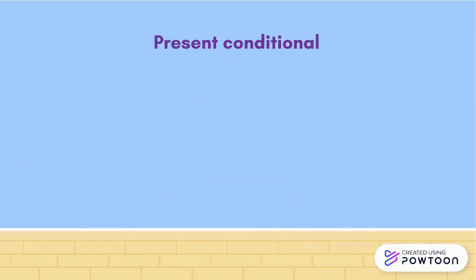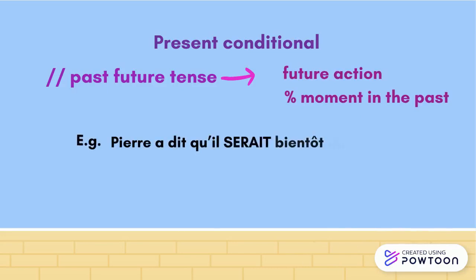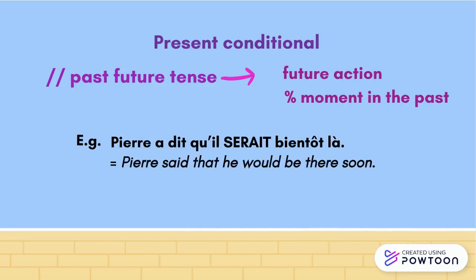The present conditional can be mistaken for the past-future tense, which has the same form, but expresses a future action in relation to a moment in the past. For example: 'Pierre a dit qu'il serait bientôt là.' Pierre said that he would be there soon.